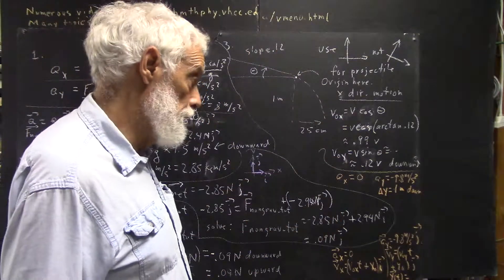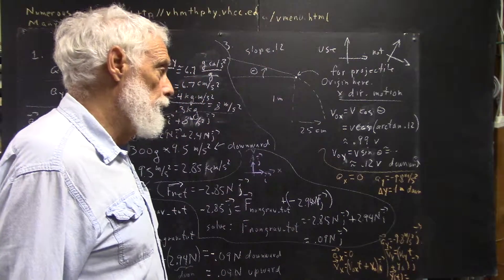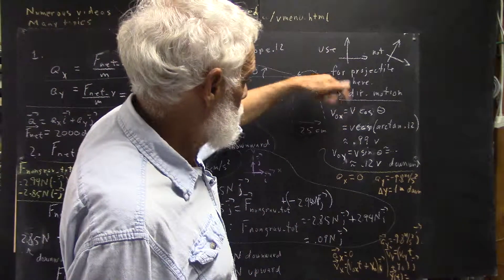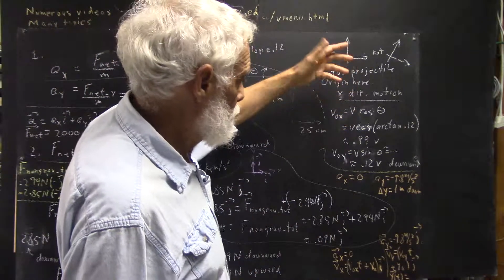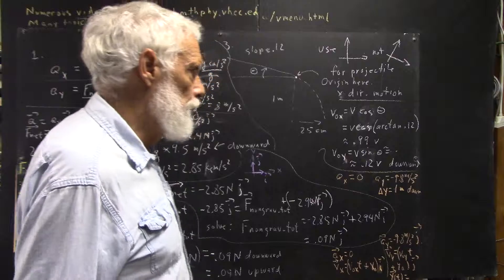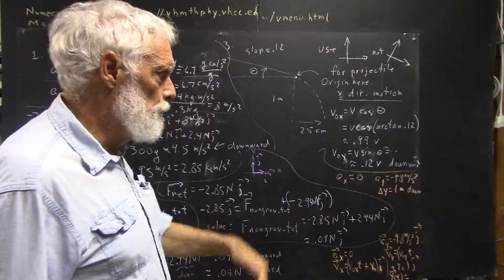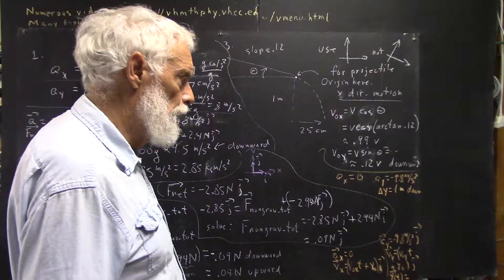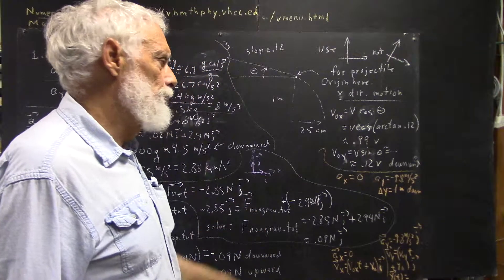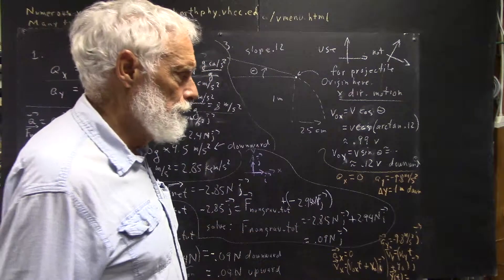In this case, what you're given is that the ball goes 25 centimeters horizontally as it falls one meter after rolling off the ramp at a given angle. You weren't really given the angle — you were given the slope — but from the slope you can easily find the angle.